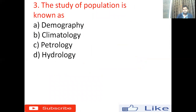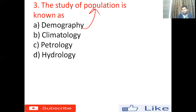Third question: The study of population is known as — option A: demography, option B: climatology, option C: petrology, option D: hydrology. The study of population in a particular area, including density, customs, and culture, is called demography. So the right answer is option A. Climatology is the branch of science where we study the climate of a particular region and how it changes over time.